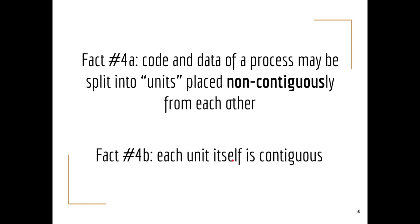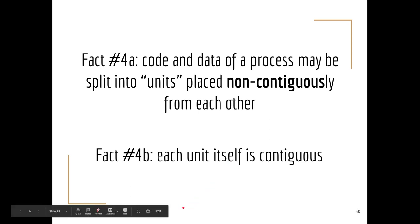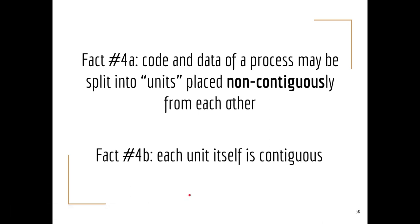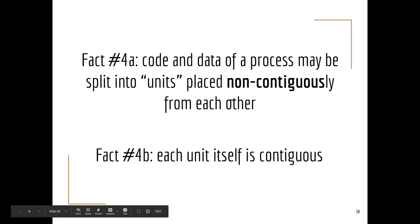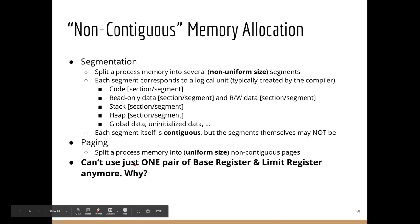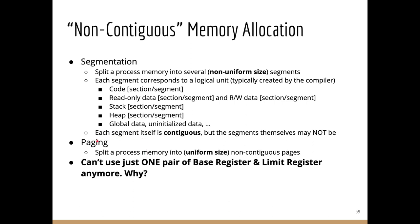This is the main motivation behind non-contiguous allocation: the entire process is placed non-contiguously, but its smaller constituents are still contiguous. The OS doesn't have to look for one large contiguous memory area; instead it looks for several smaller contiguous areas, which is easier to find. There are two approaches: segmentation and paging.